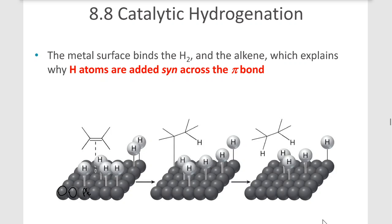The hydrogen molecule becomes adsorbed onto the surface of the metal catalyst, and then when the alkene comes along it can pick up those hydrogens and float away.